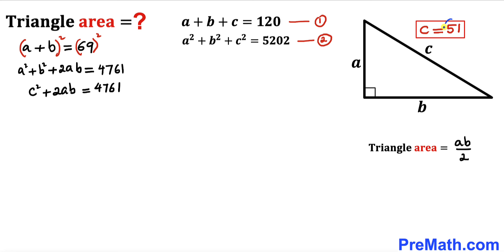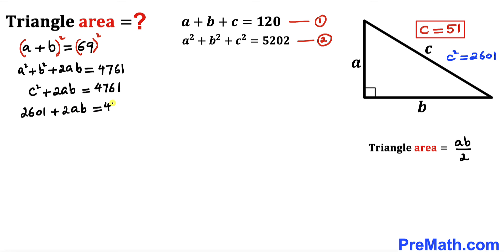Since C equals 51, C² equals 2601. Substituting, the equation becomes 2601 plus 2AB equals 4761. Subtracting 2601 from both sides, we get 2 times AB equals 2160.